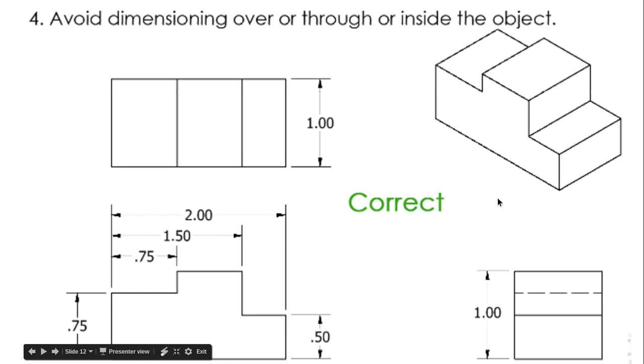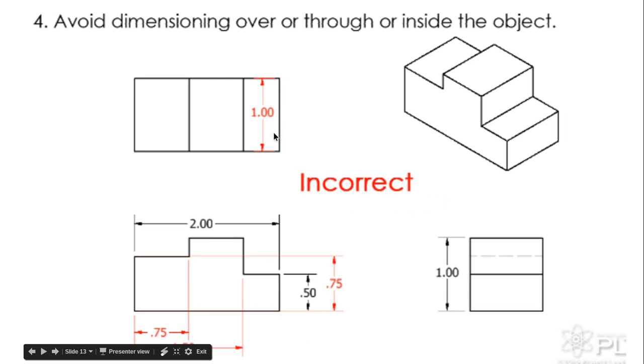Don't go inside or through an object. Again, we got outside, outside, 0.75 is there, one's here, the 0.5 is here. These are on this view. Yeah, that's not good. You know, don't put those tick marks into the drawing, that's not good.